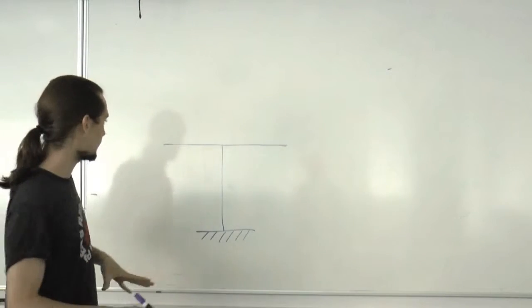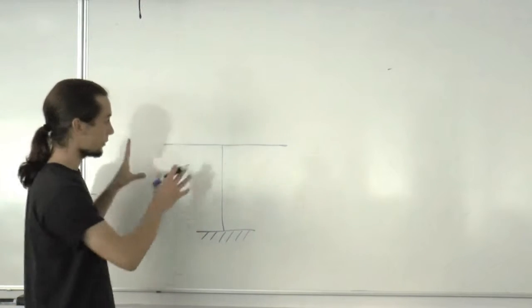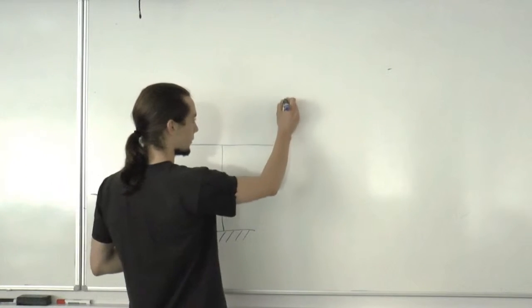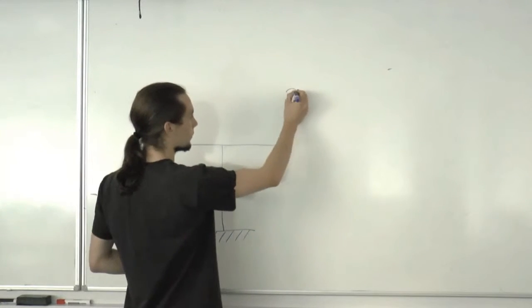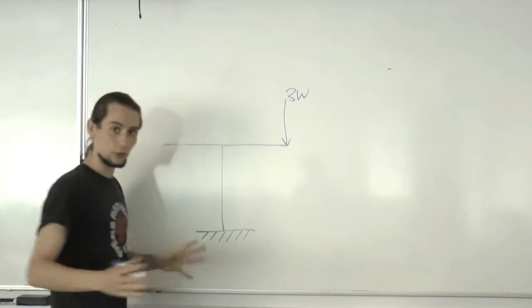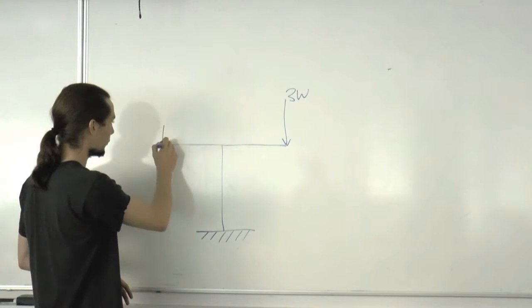Let's look at an unsymmetric load case where we have loads applied to both sides. I think they're going to need some naming. We're going to call this load 3W for reasons that will become clear. So we're going to call this load W.